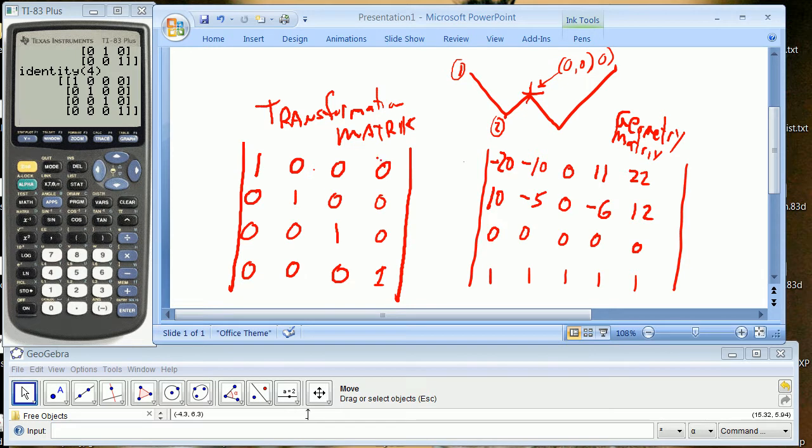The right column, these ones right here are for translation. This here is an overall scale number. Each of these is scales in the x, y, and z. If you wanted to scale everything by two you would change this to two.